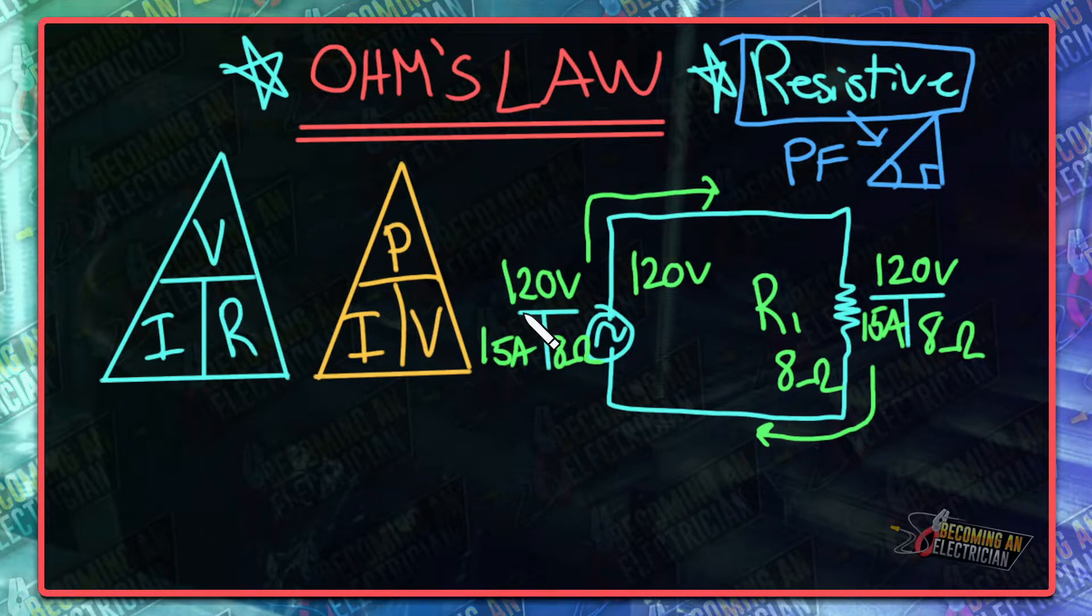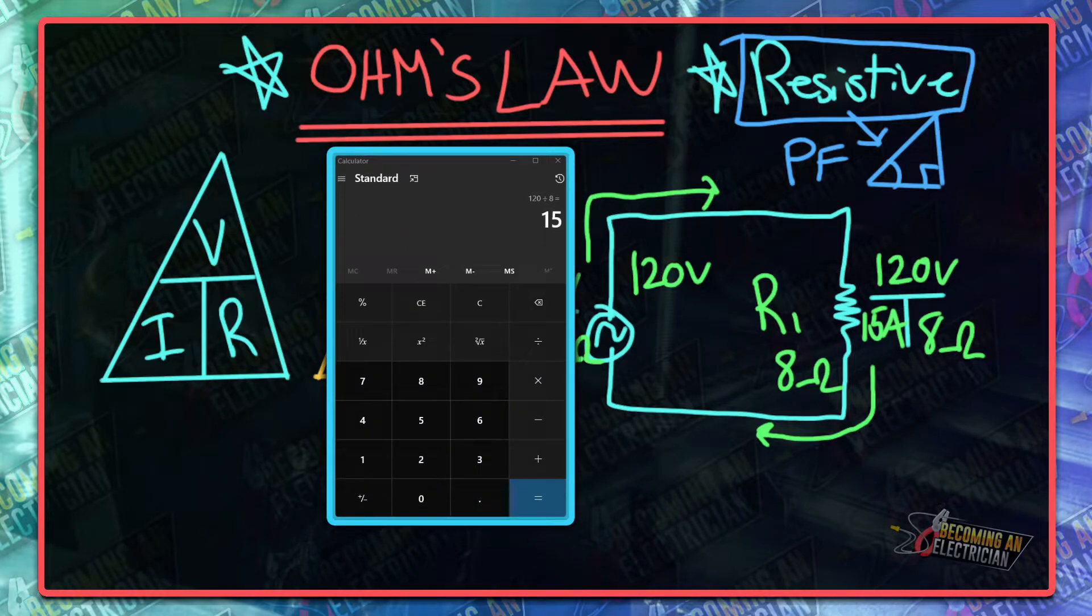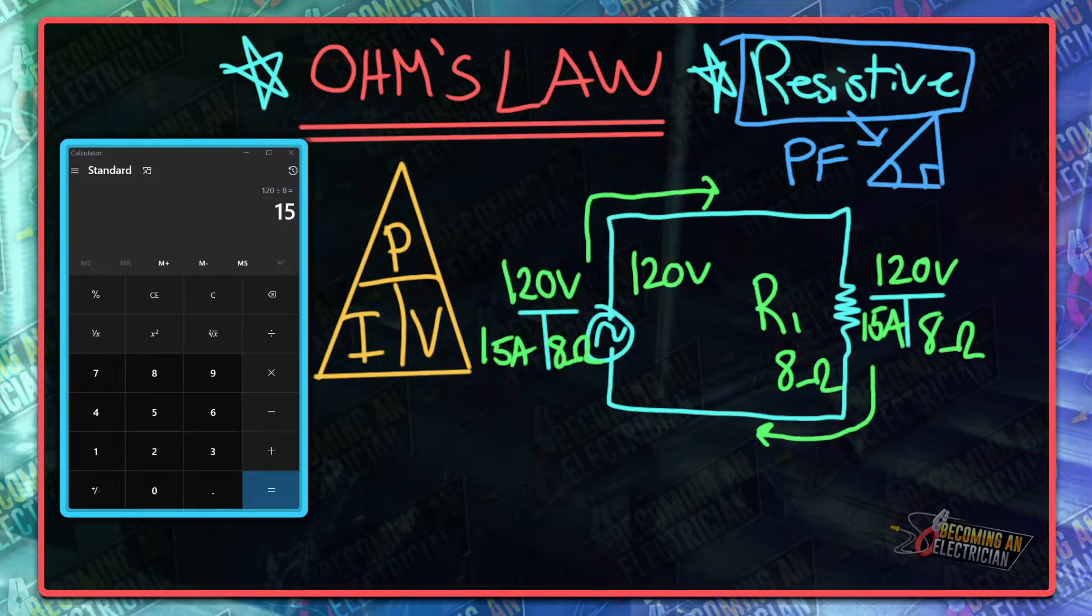Let's bring up the calculator. Our equation, you can either times current by voltage or voltage by current. We're just going to go 120 times 15, and it's going to give us the wattage of this circuit.